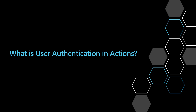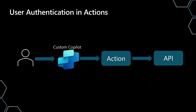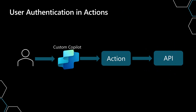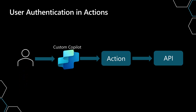The next thing we need to understand is what user authentication inside of an action in Copilot Studio means. It's the concept of a user connecting to your custom Copilot, which has different actions defined within it, and those actions get you access to the API. The key question is: do you want to use the user's authentication, or do you want the author of the Copilot to define how to authenticate to the action on the back end?